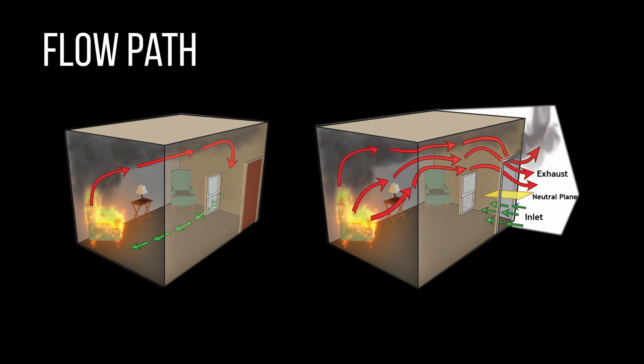In a structure fire, a flow path exists between the fire and an area of high pressure, and any adjacent room, hall, stairway, open door, or window that connects to an area of lower pressure.